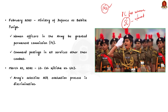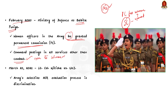In a landmark judgment in the Babitha Punia case in February 2020, the Supreme Court directed that women officers in the army be granted permanent commission, and that command postings in all services other than combat should be opened to women officers. Further, on March 25, 2021, the Supreme Court in Lieutenant Colonel Nithisha versus Union of India held that the Army's selective ACR evaluation process discriminated against women officers seeking permanent commission. These two decisions led to nearly 600 plus women getting permanent commission status in the Indian Army in 2021.